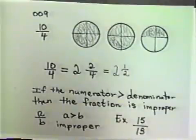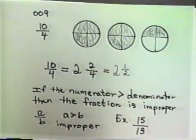Okay, so in general, we can say if we have a over b, and a is bigger than b, we have an improper fraction. Another example of an improper fraction is fifteen-thirteenths.